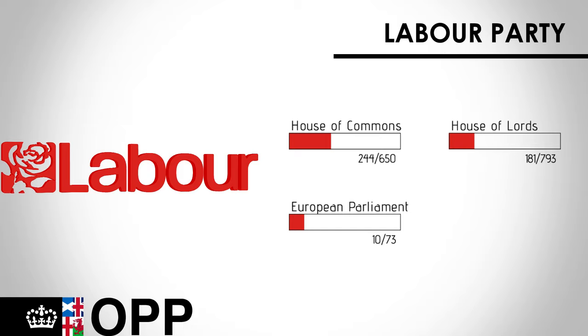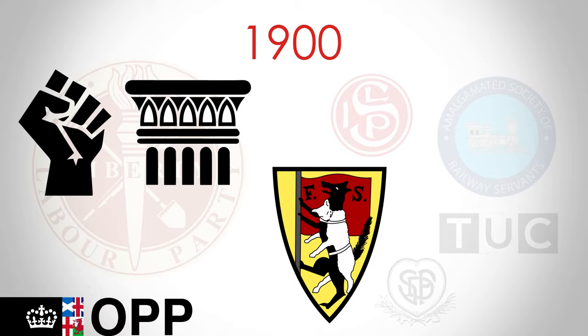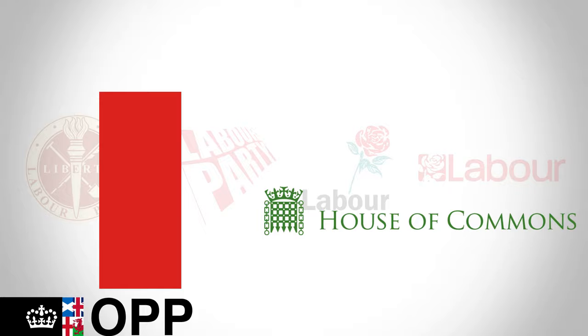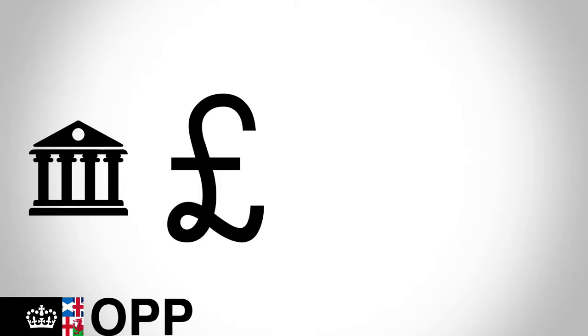The Labour Party is a centre-left socialist and social democratic party. It was founded in 1900 as a coalition of trade unions and other groups such as the Social Democratic Fabian Society, which promotes socialist and democratic values. It's been a major political power since the 1920s. The first Labour Prime Minister was voted into office in 1924, and the party was elected as a majority government for the first time in 1945, after being the junior partner in the wartime coalition with Churchill's Conservatives. Since the Second World War, Labour has been the governing party four times and remained one of the two strongest parties in the country. While the party is ideologically diverse, its core is socially liberal, social democratic, and socialist.